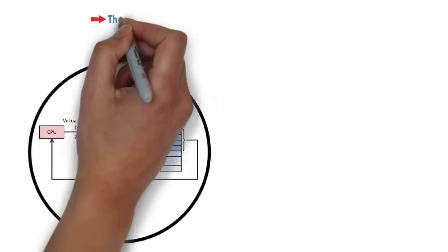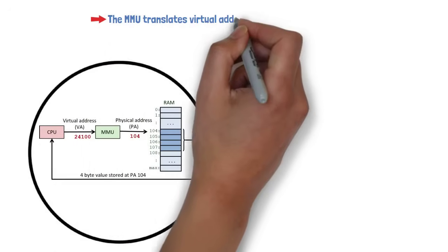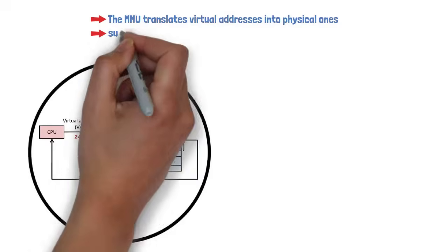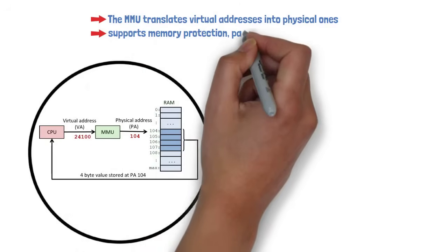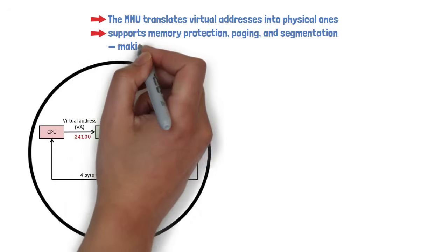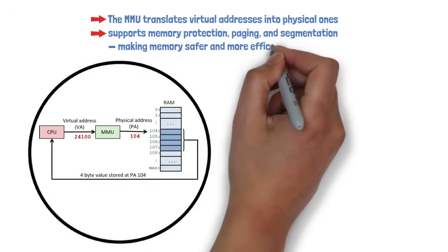The MMU translates virtual addresses into physical ones. It supports memory protection, paging, and segmentation, making memory safer and more efficient.